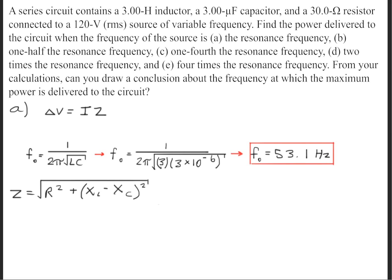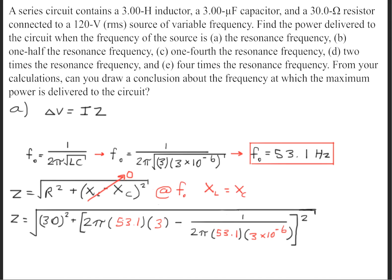The first thing we need to do is figure out the resonance frequency. Then we'll take that resonance frequency and plug it into the impedance formula. At resonant frequency, the impedance is simply equal to the resistance squared. This is true because the inductive reactance should equal the capacitive reactance.